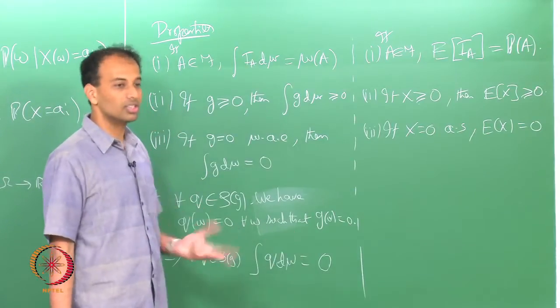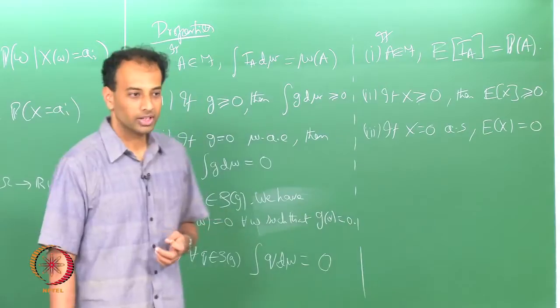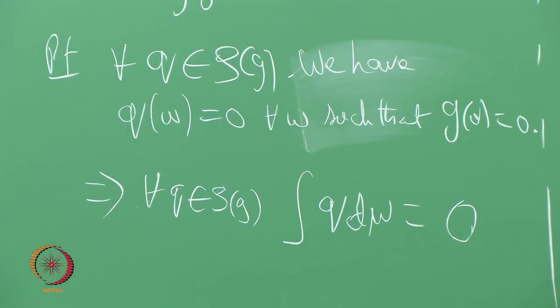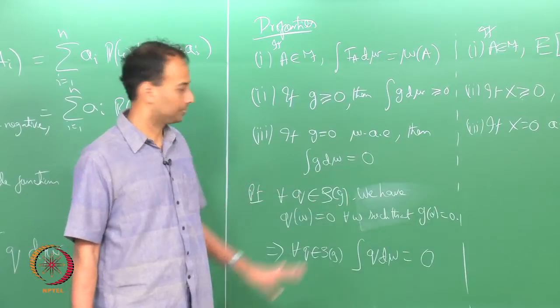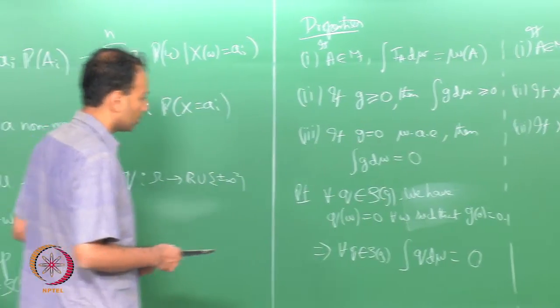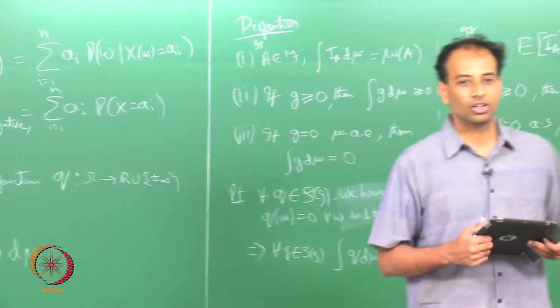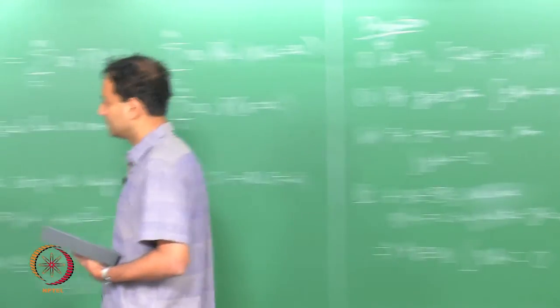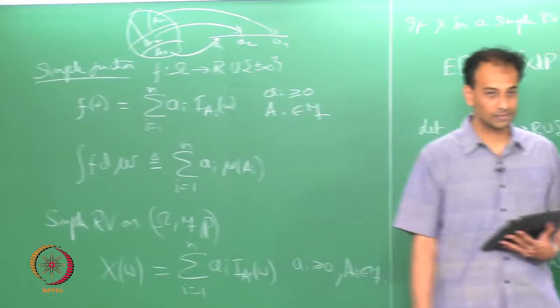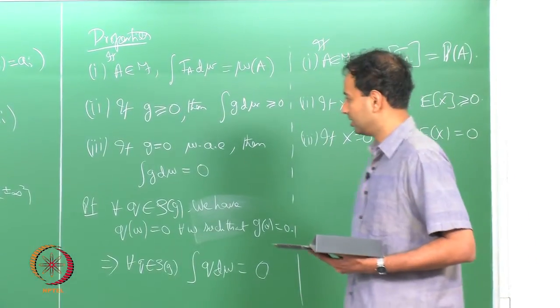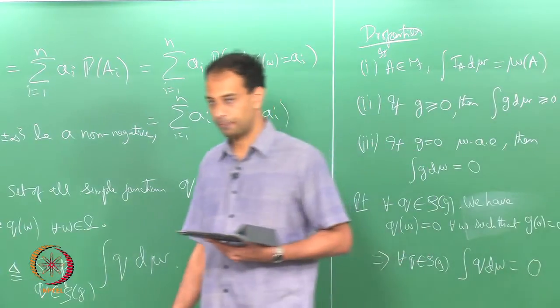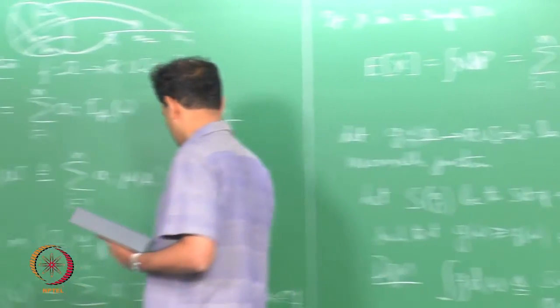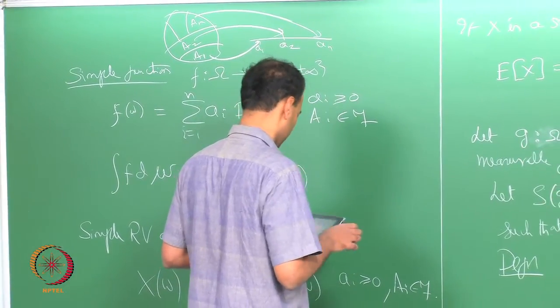Although this definition is very difficult to use to compute integrals, it is already helping us prove some non-trivial properties. Note that q of omega being a simple function is always non-negative — simple functions are defined to have a_i greater than or equal to 0. I have not yet talked about integrals of functions that can take negative values; now may be a good time to do that.